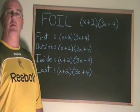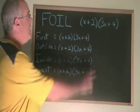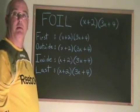The FOIL is a trick we use when we are multiplying two binomials. In this example we have x plus 2 times 3x plus 4.